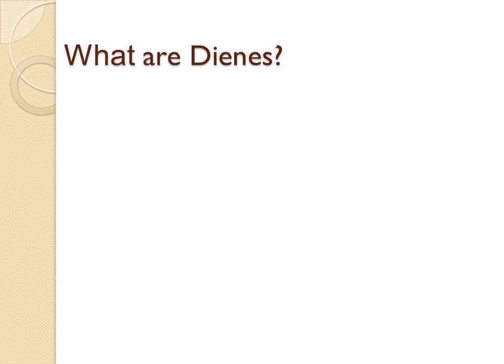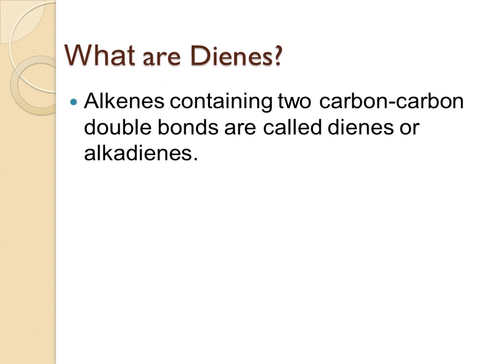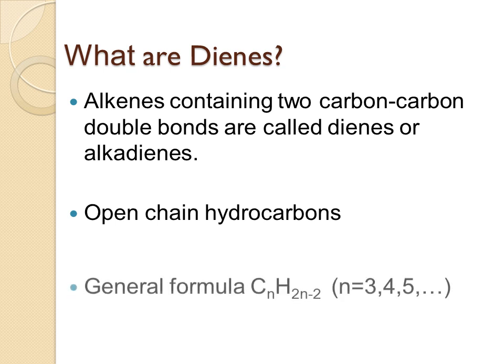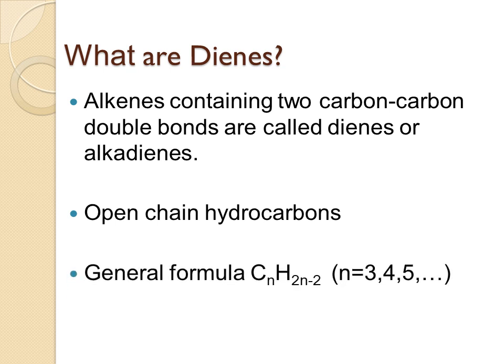What are dienes? Dienes are simply alkenes containing two carbon-carbon double bonds. If there are two double bonds in an alkene, it is called a diene or alkadiene. These dienes are generally open chain hydrocarbons. Their general formula is CnH2n-2, where n is an integer ranging from 3, 4, 5, etc.